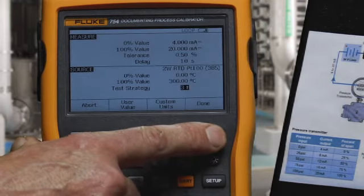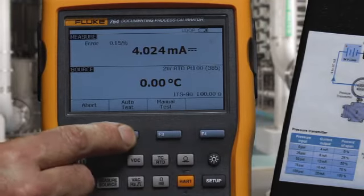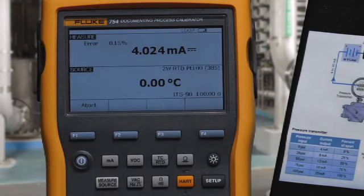We're going to test three points. Select auto test, and the performance of the transmitter will be recorded.